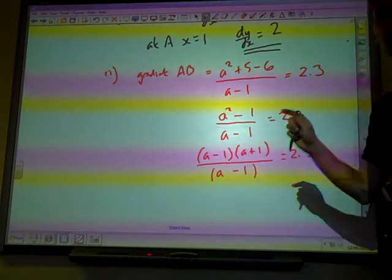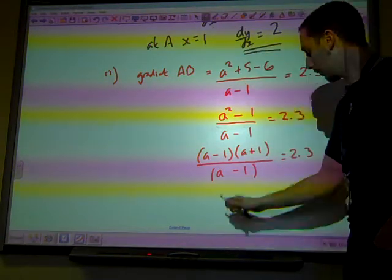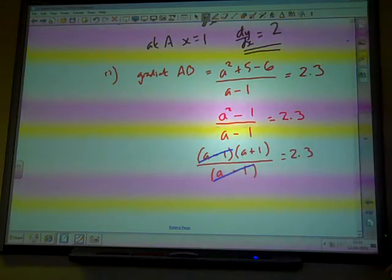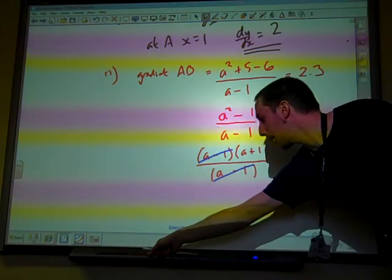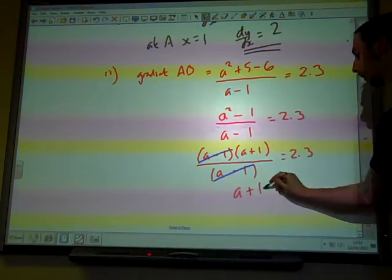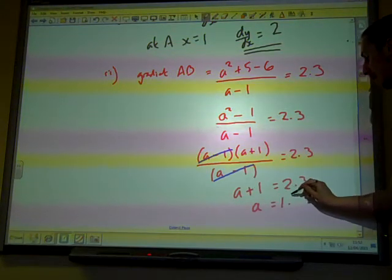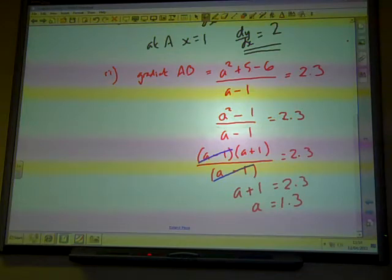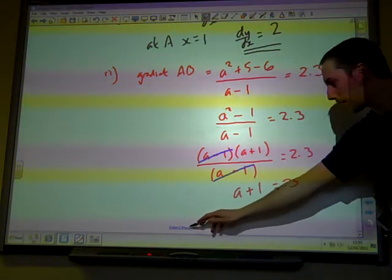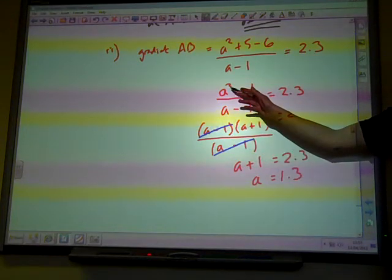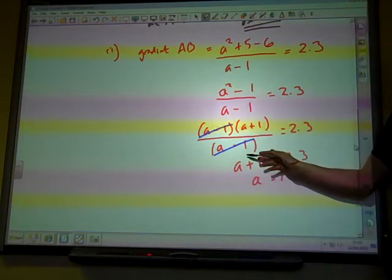The (a - 1) bit is just going to cancel out. a - 1 is a common factor, top and bottom. So we end up saying that a + 1 = 2.3, so a = 1.3. It's easy if you notice that you can factorize a² - 1 and cancel out the factor.